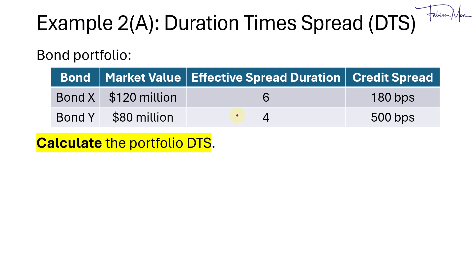In Example 2, we have a bond portfolio with two bonds: Bond X and Bond Y. Bond X has a market value of $120 million, an effective spread duration of 6, and a credit spread of 180 basis points. Bond Y has a market value of $80 million, a spread duration of 4, and a credit spread of 500 basis points.